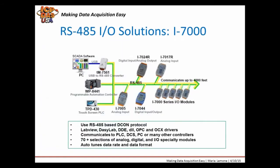ICP-DAS started in 1993 and our first products were our I-7000 series distributed I/O modules. They come in a wide range of digital and analog I/O configurations, including thermistor, RTD, current, voltage, strain gauge, relay, and digital I/O. They are communicable over RS-485 serial, over our own DCON protocol, which can work with Easy Data Logger, WinPak Programmable Automation Controllers, TPD Touchscreen PLCs, and embedded I7188EX controllers.